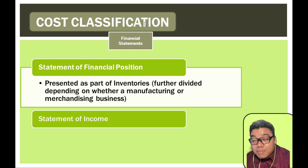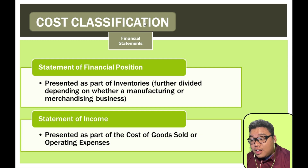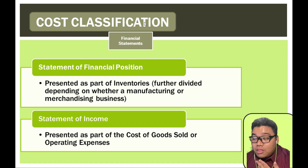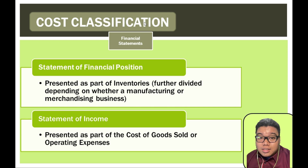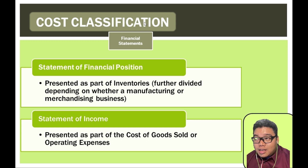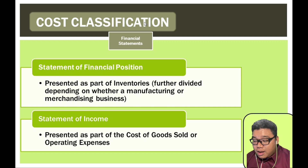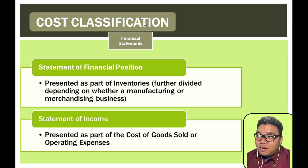For the income statement, we have cost of goods sold and operating expenses. Cost of goods sold are manufacturing costs of units that have already exited the company — these are product costs of products already sold. Operating expenses such as marketing and other expenses are period costs, recognized when incurred regardless of when the related unit is sold.